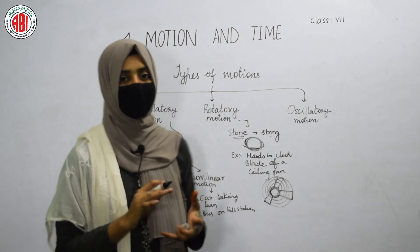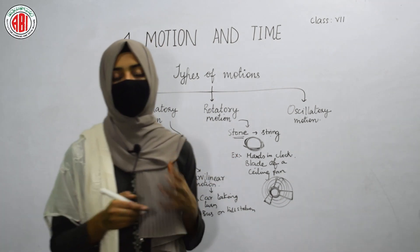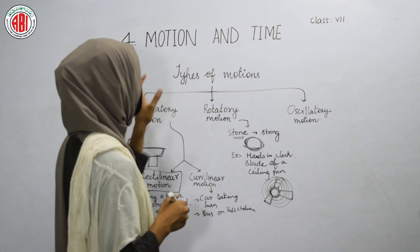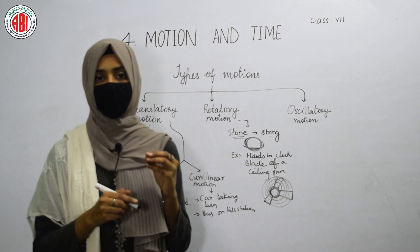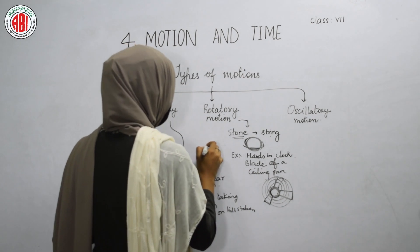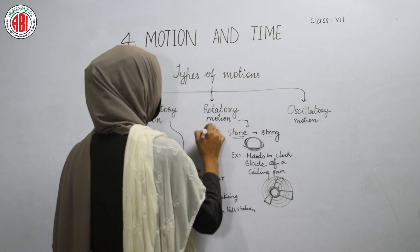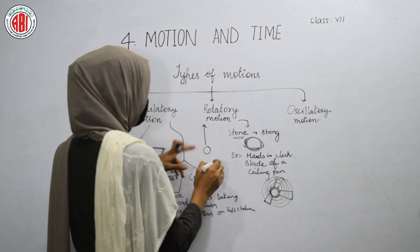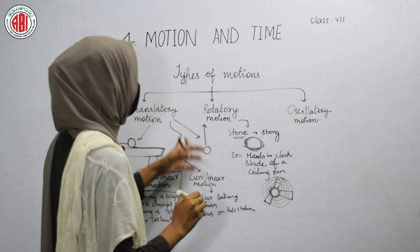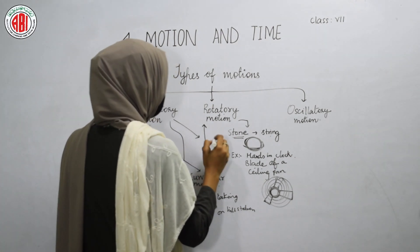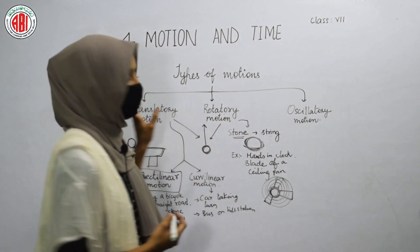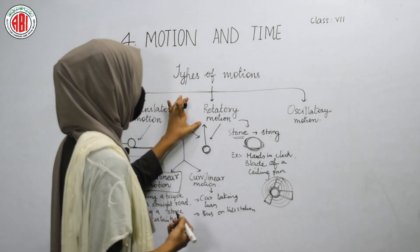There are some objects, like a ball, that show both translatory motion and rotatory motion. When you roll a ball on a table, the ball moves from one direction to another — that is translatory motion. But during the movement, the ball also rolls, and this rolling is called rotatory motion. In this way, the ball is an object that shows both translatory motion and rotatory motion.